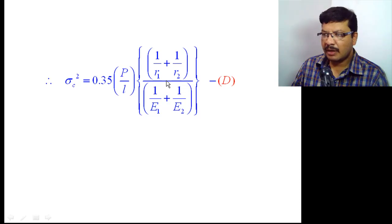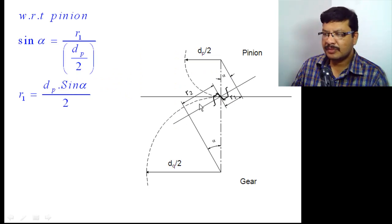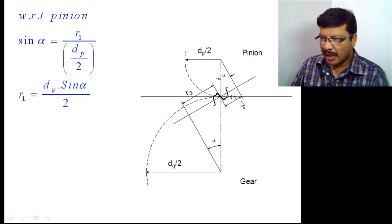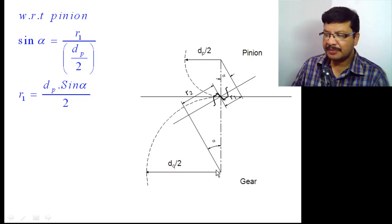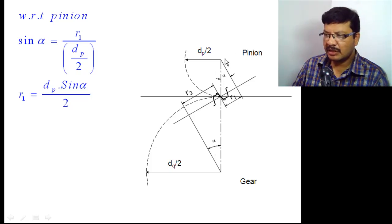r1 and r2 are the radii of curvature of the gear tooth at the point of contact — these two values you have to find. For finding r1 and r2, I will take the geometry with the pinion, the gear, and the pitch point. r1 is the radius of curvature of the pinion tooth at the point of contact; r2 is the radius of curvature of the gear tooth at the point of contact. Alpha is the pressure angle.